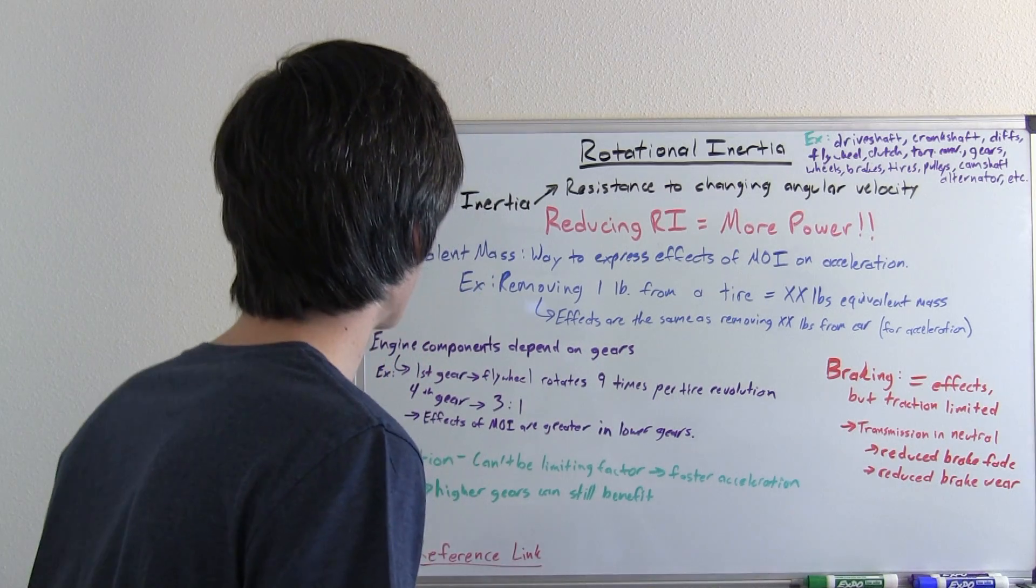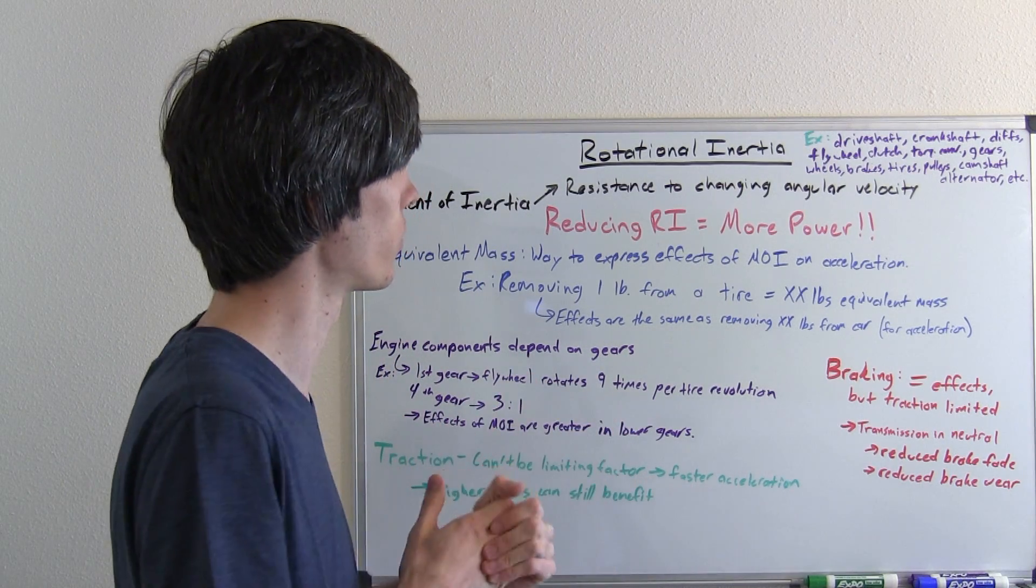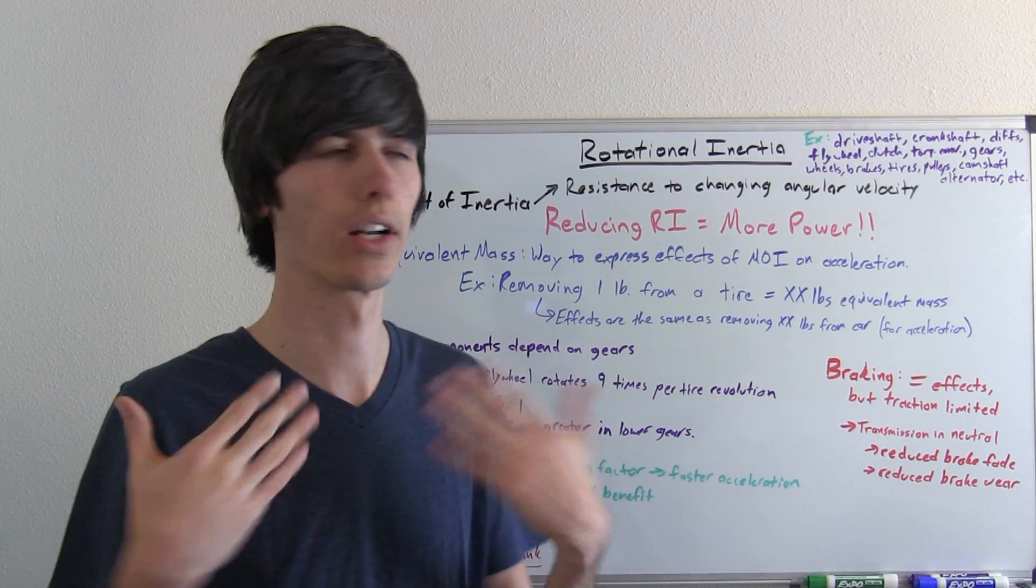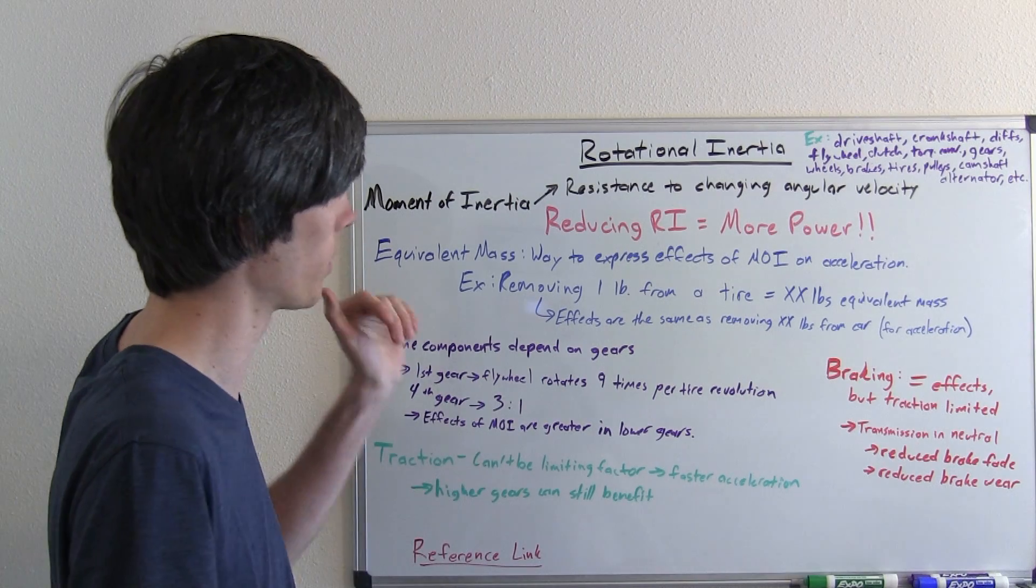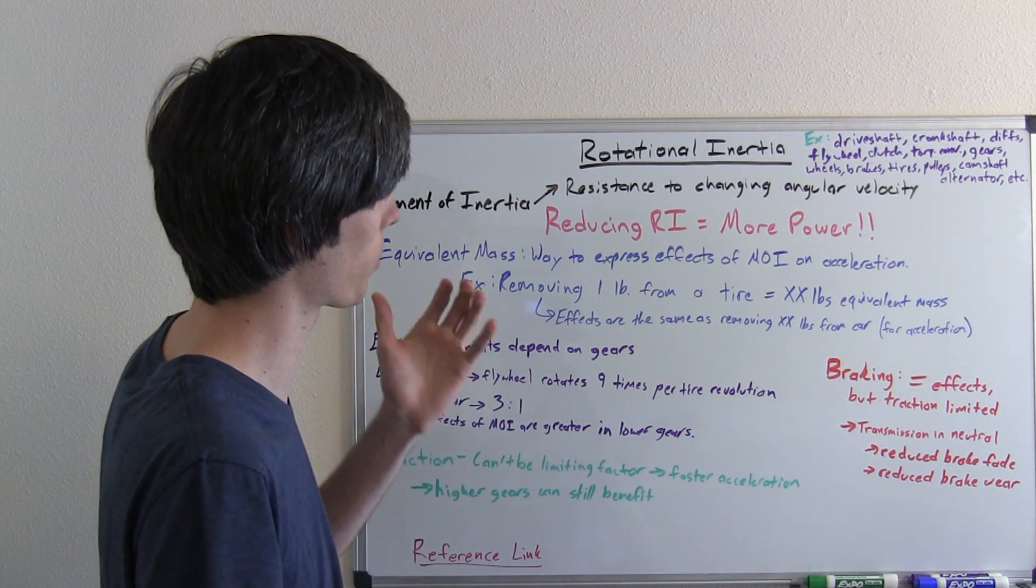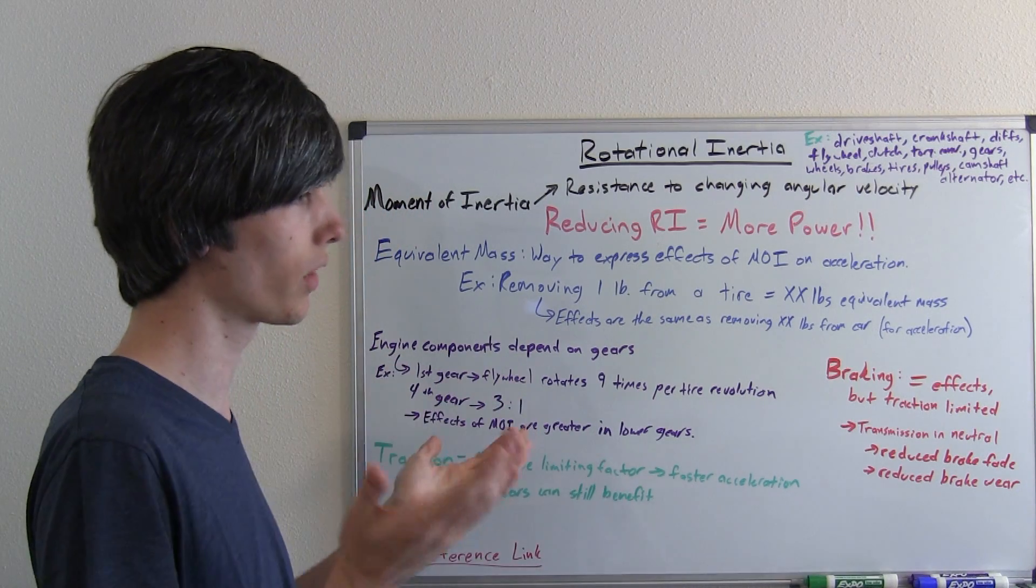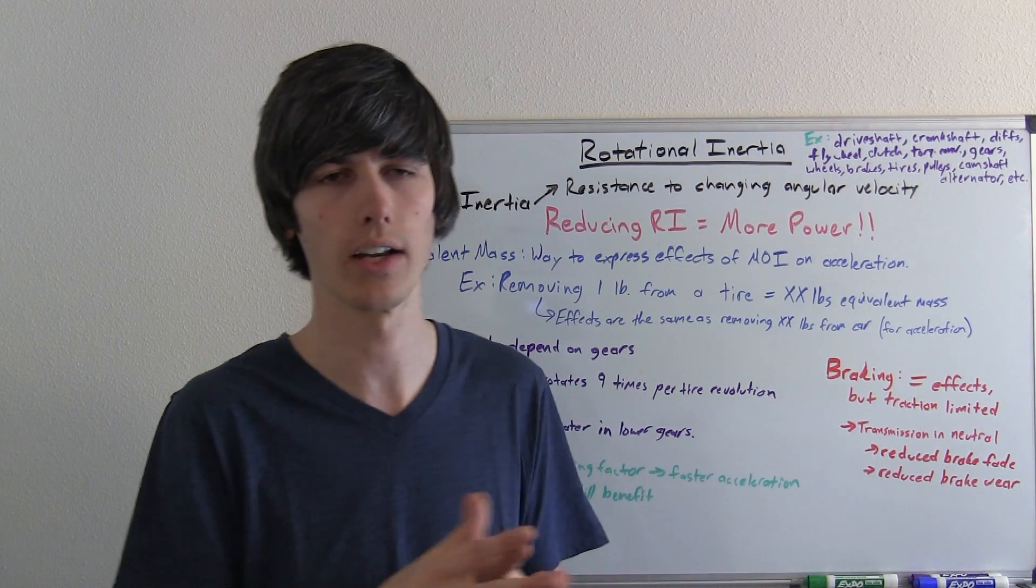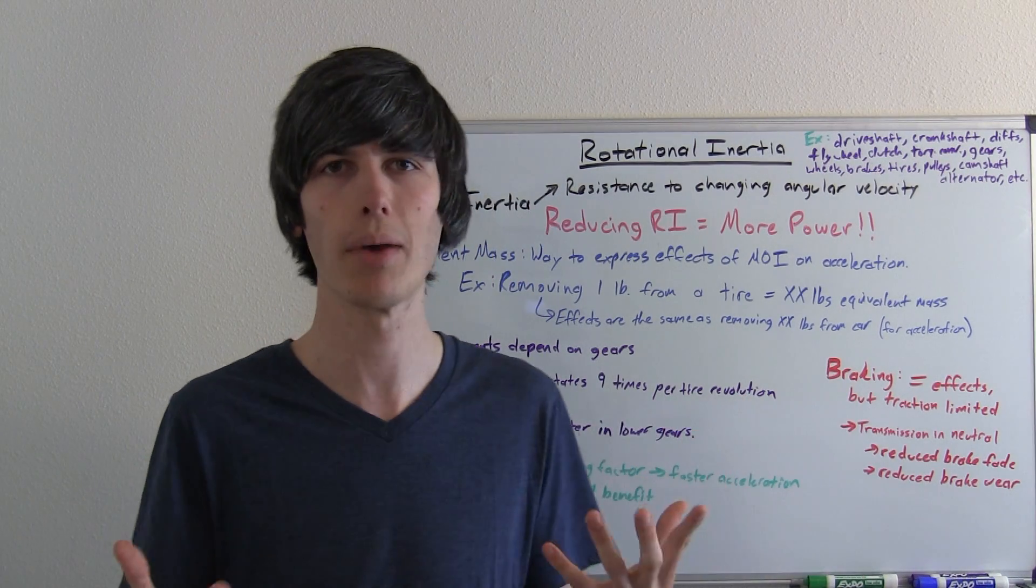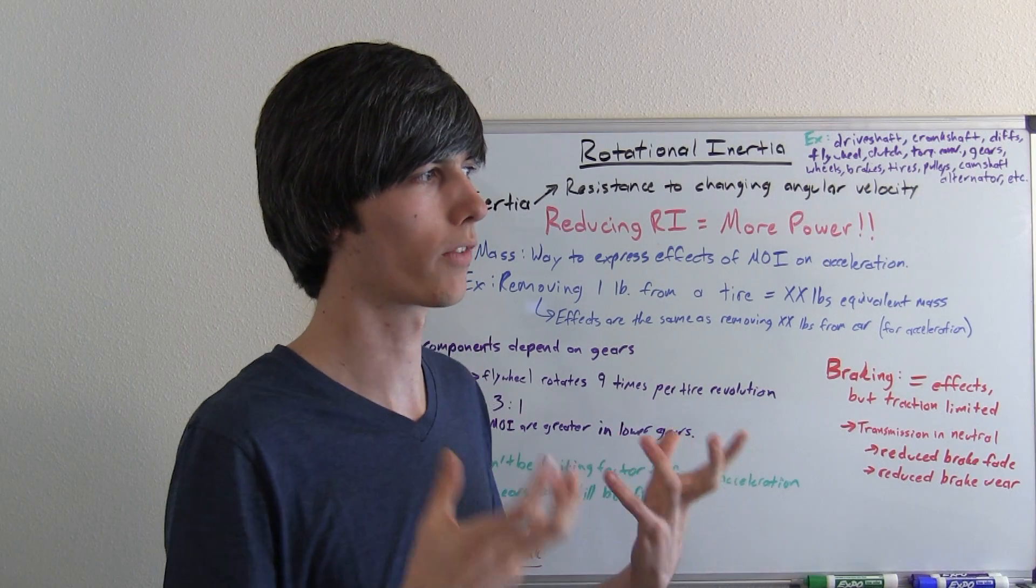So I'm going to talk about some of the different things and how these reductions mean you're going to accelerate quicker. So one of the easiest ways to talk about this is equivalent mass, and this is a way to express the effects of an object's moment of inertia on acceleration. So an example would be by removing one pound from each of your tires, if there was some compound that was lighter and just as strong, that may be worth removing an equivalent mass of say two pounds.